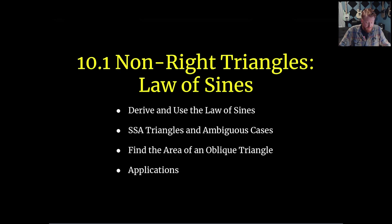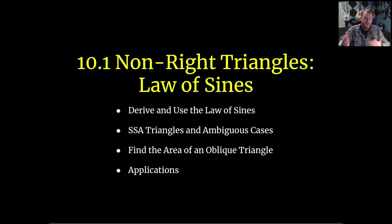Hello everybody, welcome to today's video. Today we will be covering the Law of Sines. We'll be going over some non-right triangles. We're going to derive and use the Law of Sines, go over different types of triangles where we can use it, and specifically for SSA triangles there is an ambiguous case where we need to do a little thinking. We'll find the area of oblique triangles, which are non-right triangles, and then look at some application problems.